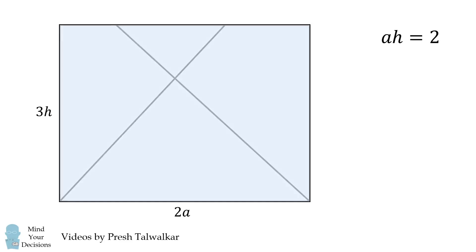Therefore, the area of this entire rectangle will be 2a multiplied by 3h, which is equal to 6ah. Since ah is equal to 2, 6ah will be equal to 12.